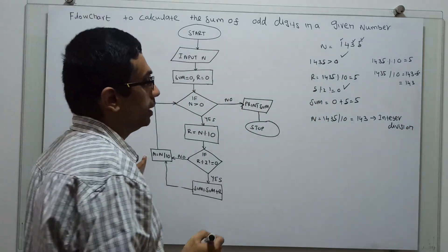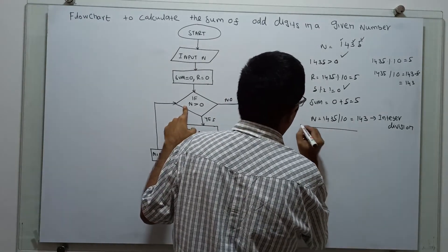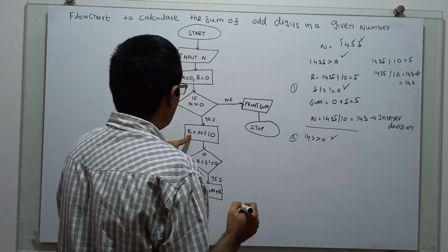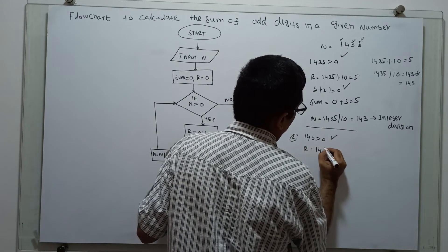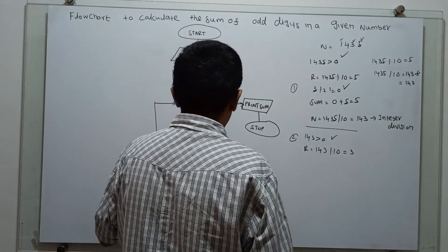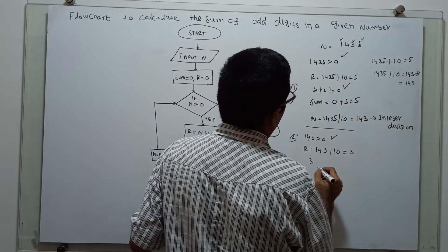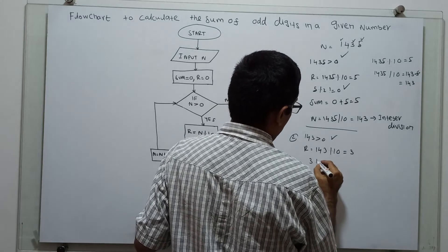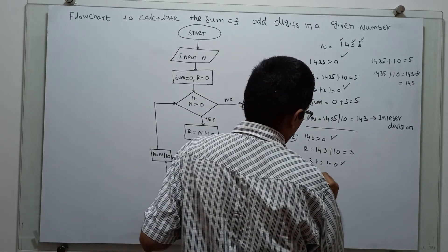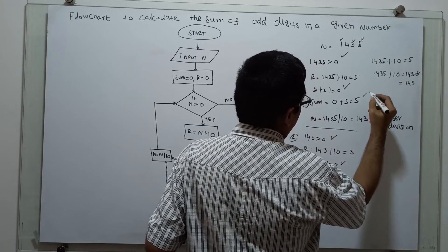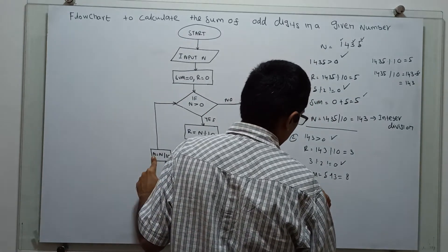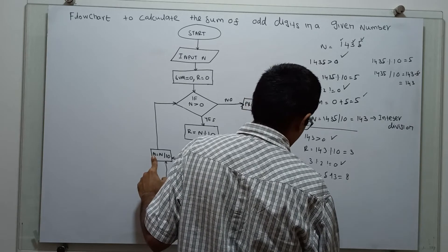Second iteration: 143 greater than 0 is true. R equal to 143 modulo 10 — the remainder is 3, so R is 3. Then 3 modulo 2 not equal to 0 is true. Sum equal to sum plus R — the existing value of sum is 5, R is 3, so 5 plus 3 equals 8. N equal to n divided by 10, so n becomes 14.